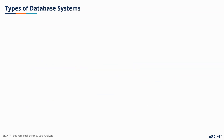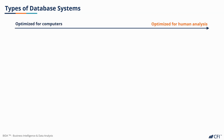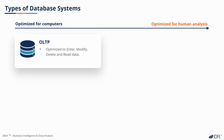At a basic level, we have two types of database systems. Some are optimized for transactional computing, whilst others are optimized for analysis by humans. At one end, we have what's known as an OLTP database, which is optimized for entering, modifying, deleting, and reading data.